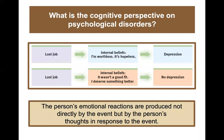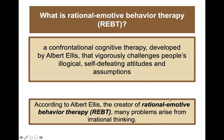From the cognitive perspective, a person's emotional reactions are produced not directly by an event, but by the person's thoughts in response to the event. For example, someone loses a job — one person thinks 'I'm worthless, I'm hopeless,' which could lead to depression. But a second person who also lost a job thinks 'it wasn't a good fit anyway, I deserve something better,' and would be much less likely to develop depression.